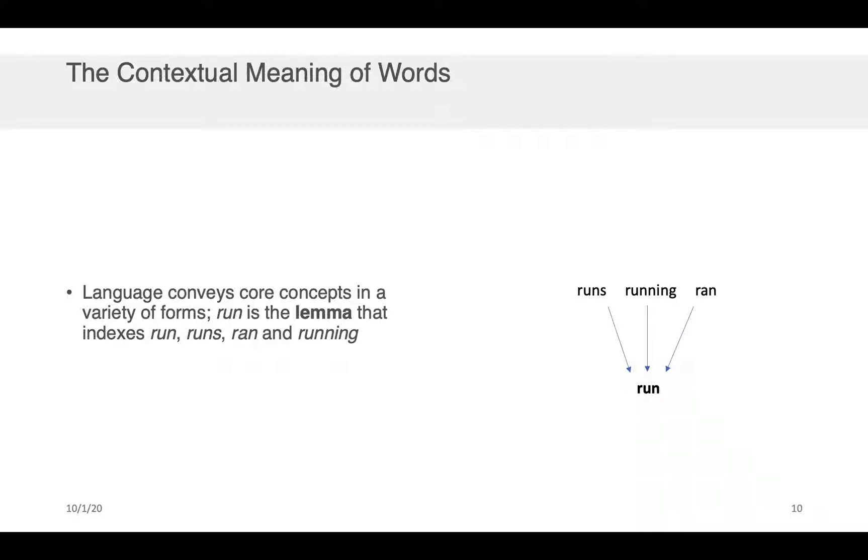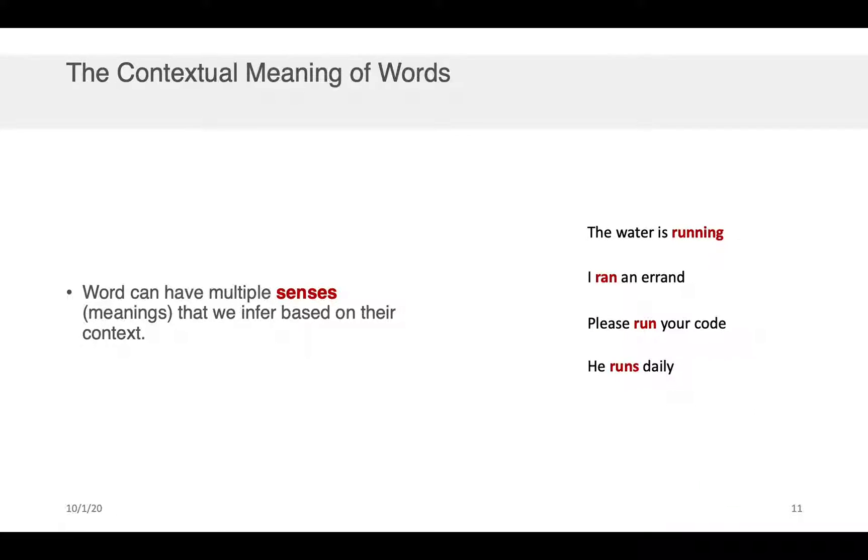Okay, well the idea here fundamentally is that language does convey core concepts. Run, for example, is a core concept that runs, running, and ran all refer to. So we like to refer to those core concepts as lemmas in natural language processing. But the contextual component of this comes into play when you consider that words have multiple senses or meanings that we infer based on their context.